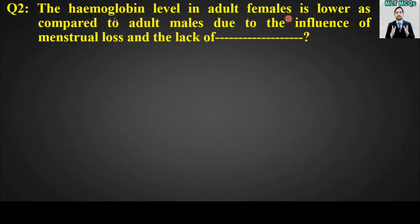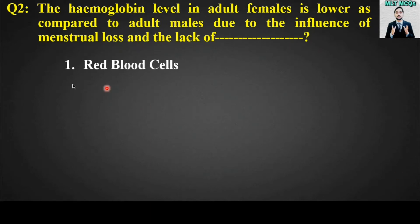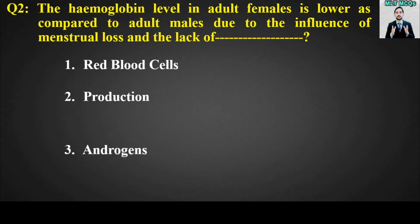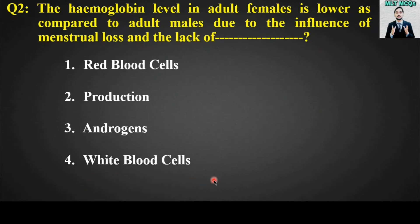MCQ number two: The hemoglobin level in adult female is lower as compared to adult males due to the influence of menstrual loss and the lack of blank. Options are: red blood cells production, androgens, or white blood cells. The right answer is option number two — androgens.